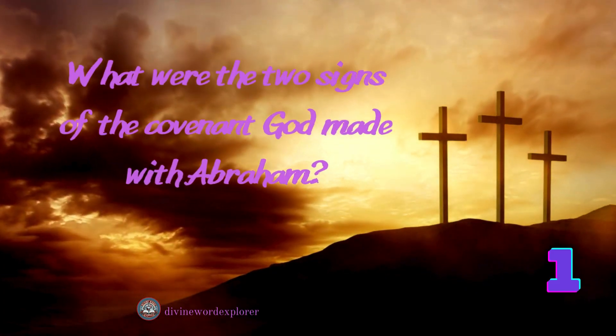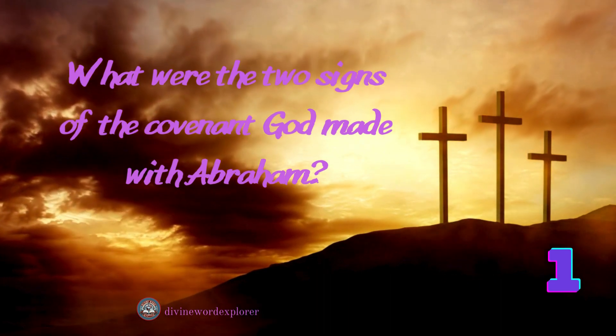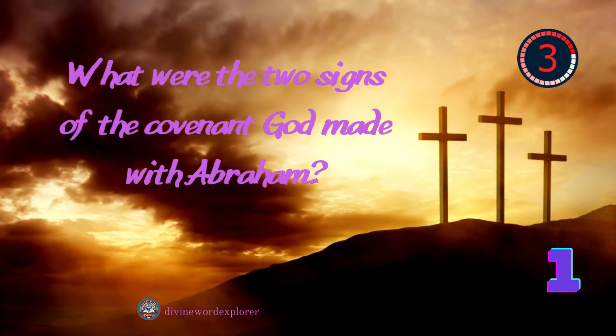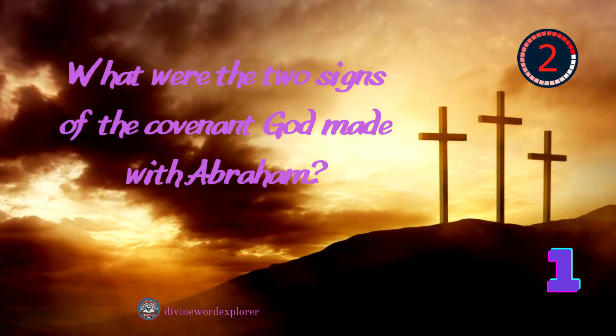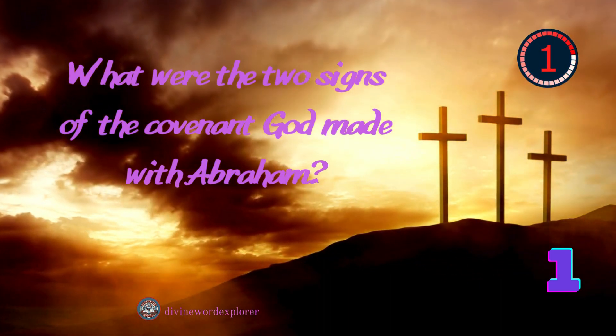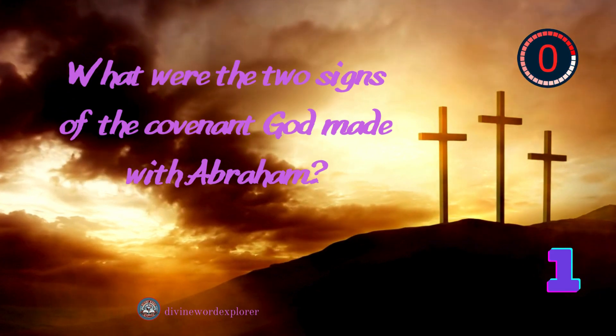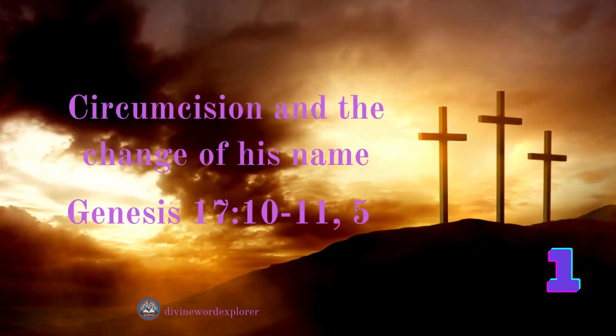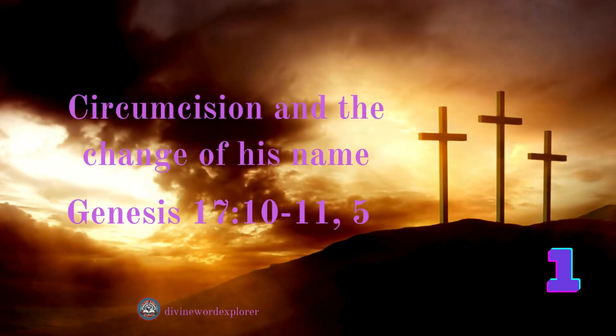What were the two signs of the covenant God made with Abraham? Answer: Circumcision and the change of his name.